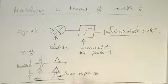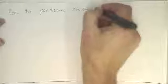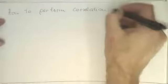And so now the question is, how can we implement this here with our filters? So what we would like to do is, we would like to implement an FIR filter with this. So how to perform correlation on an FIR filter?